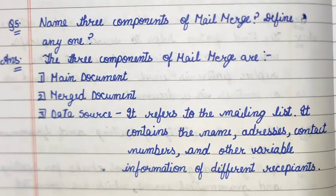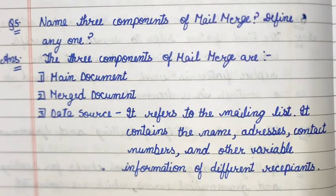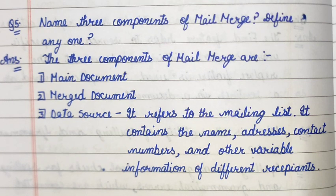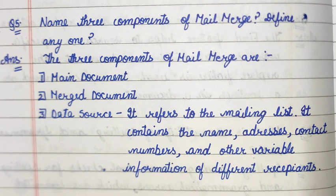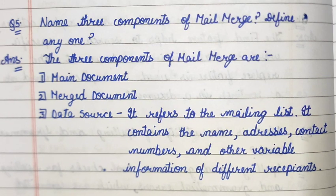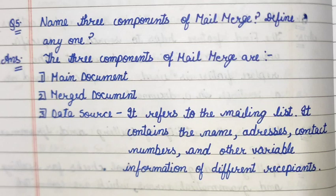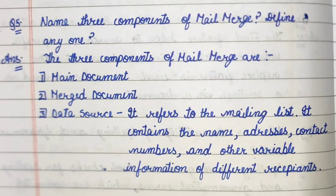Question number five: name three components of mail merge and define any one of them. Answer: the three main components of mail merge are the main document, the merge document, and the data source. The data source refers to the mailing list — it contains the name, address, contact, and other variable information of different recipients. Thank you.